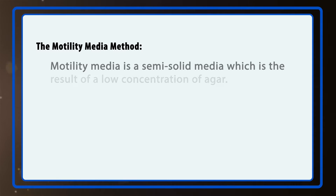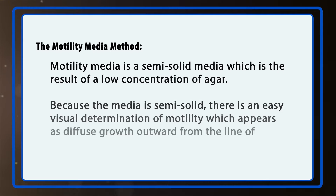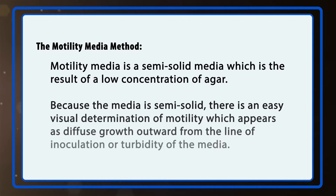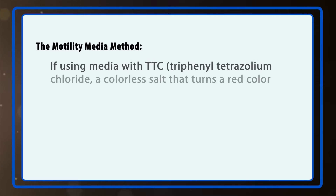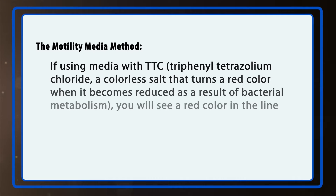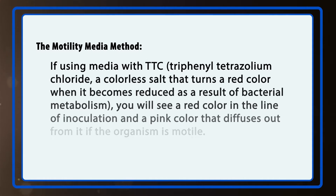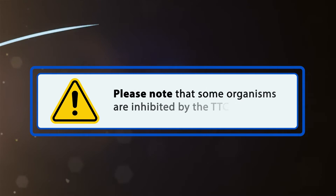Motility media is a semi-solid media, which is the result of a low concentration of agar. Because the media is semi-solid, there is an easy visual determination of motility, which appears as diffuse growth outward from the line of inoculation or turbidity of the media. If using media with TTC, triphenyl tetrazolium chloride — a colorless salt that turns red when it becomes reduced as a result of bacterial metabolism — you will see a red color in the line of inoculation and a pink color that diffuses out from it if the organism is motile. Please note that some organisms are inhibited by the TTC.